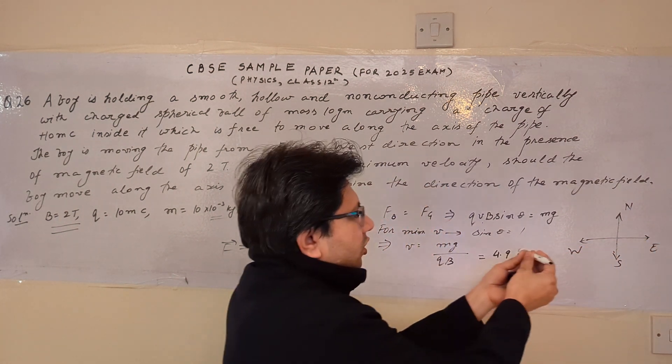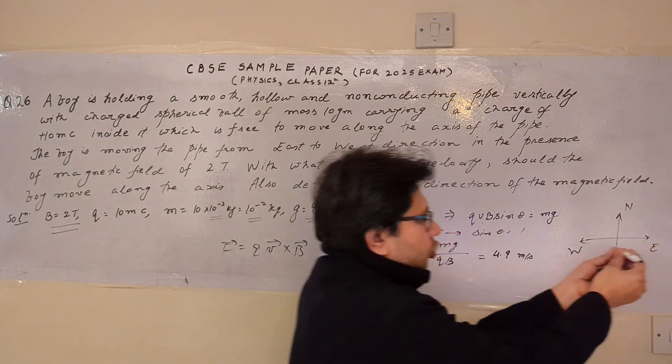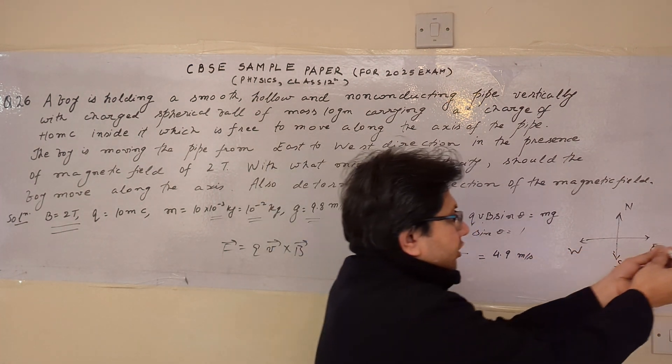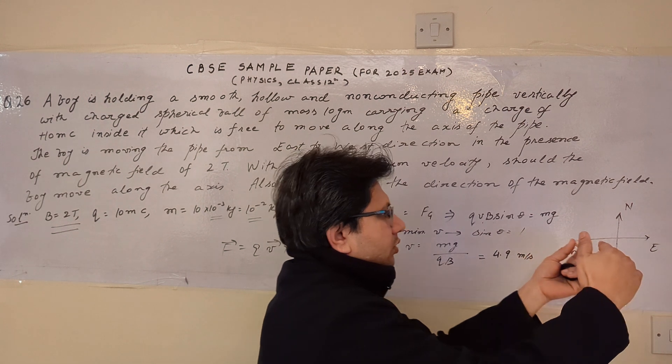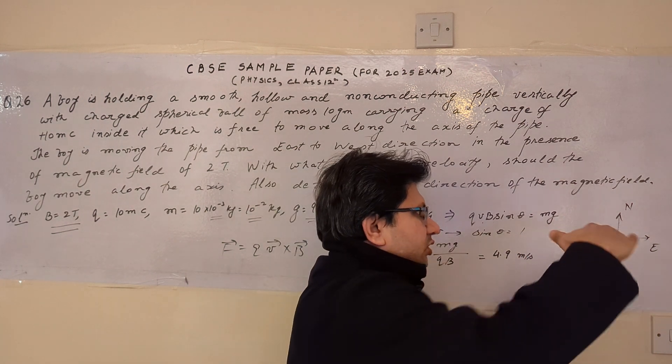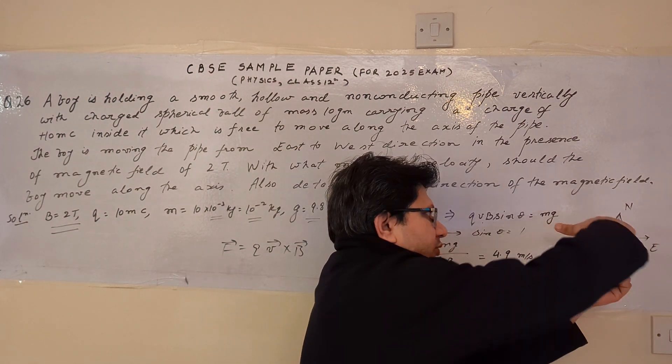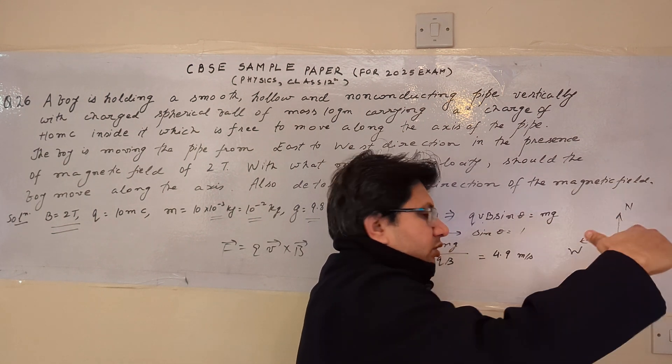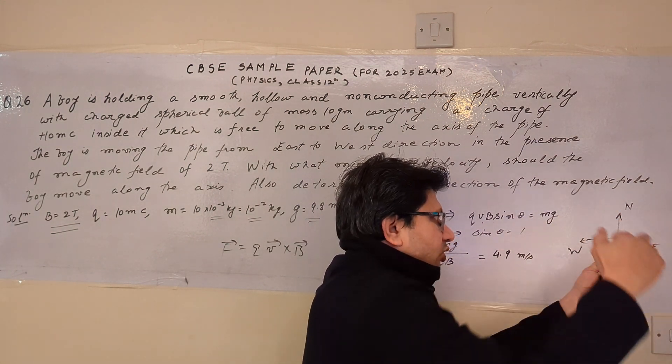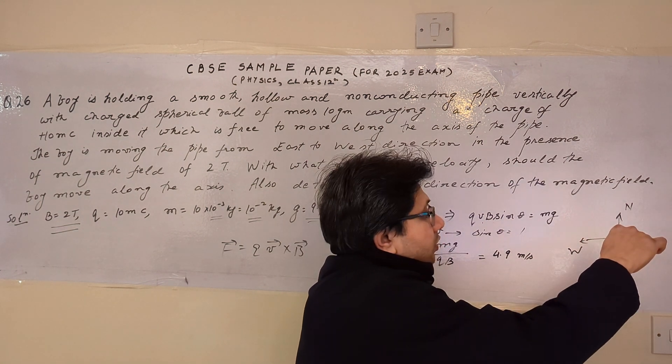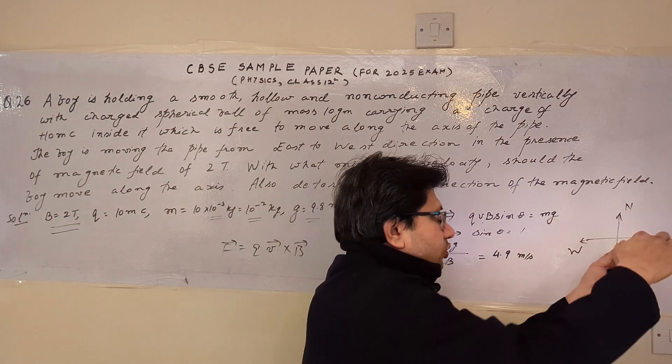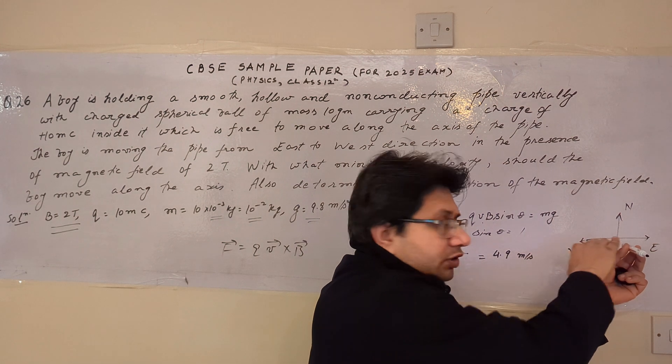The boy is moving from east to west. So the direction of velocity is from east to west. The gravitation force is towards the earth. This is the direction of the gravitation force, inwards to this particular plane of the board. This is the direction of the mg, the force applied towards the center of the earth.